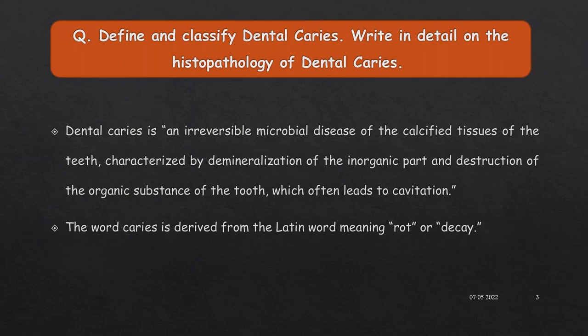Today's topic for discussion is going to be dental caries. The previous year university question asked on this topic is: define and classify dental caries, and write in detail about the histopathology of dental caries. I'll be noting down the important Viva Voce questions such as definitions and classifications. The most common and accepted definition of dental caries is an irreversible microbial disease of the calcified tissues of the teeth, characterized by demineralization of the inorganic part and destruction of the organic substance of the tooth, which often leads to cavitation. This is the standard definition to be answered.